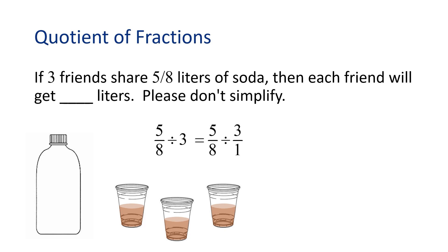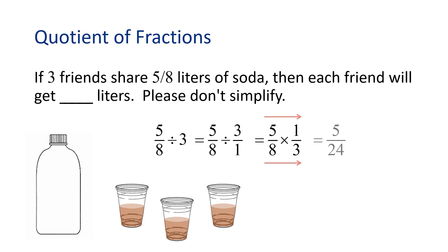We can write the number three as a fraction, such as three over one. The process of dividing fractions is to change it into a multiplication problem. We will multiply by the reciprocal of the second fraction. So in this case, the reciprocal of three over one is one over three. Now we want to multiply five-eighths times one-third. To multiply, we multiply straight across in the numerator and in the denominator. Five times one is five, and eight times three is twenty-four.